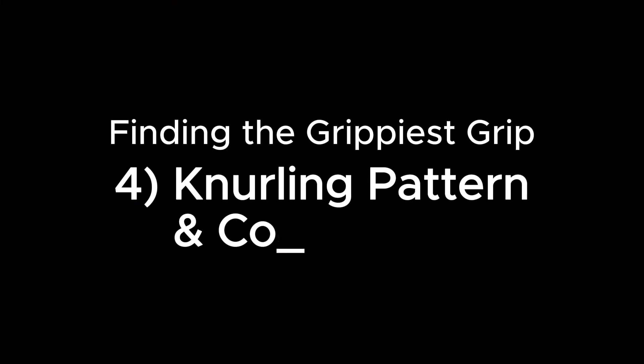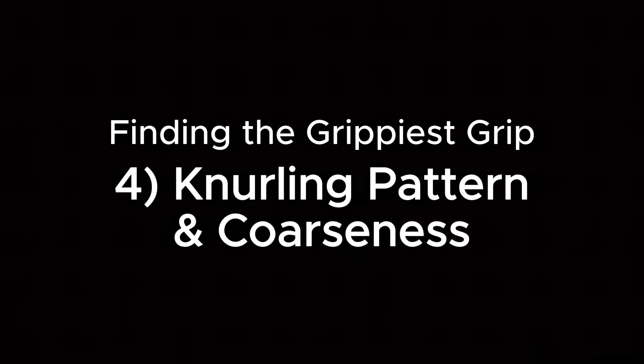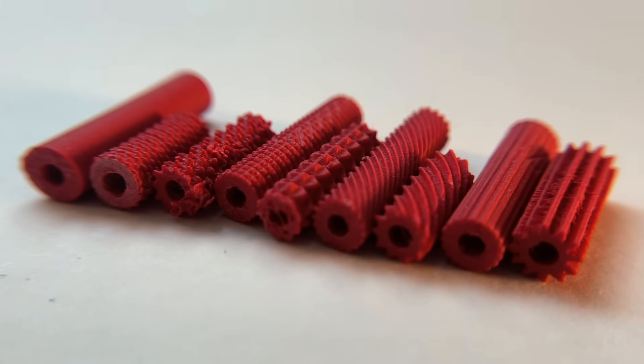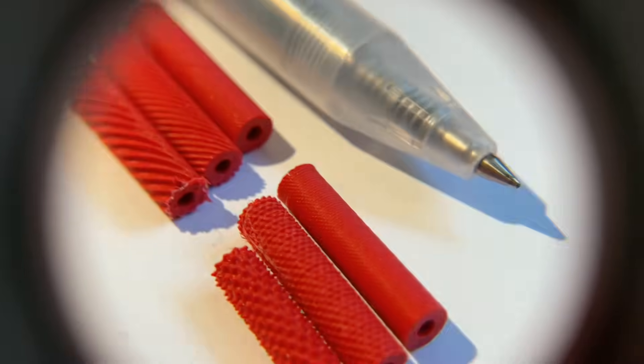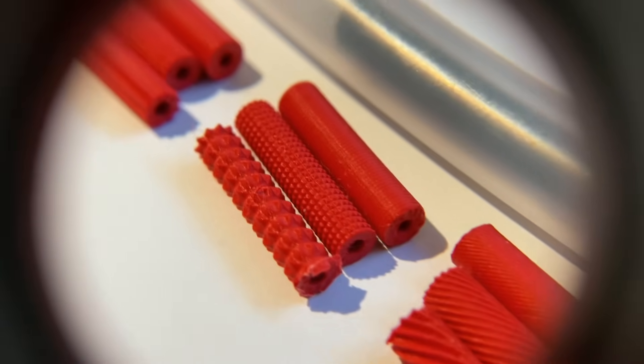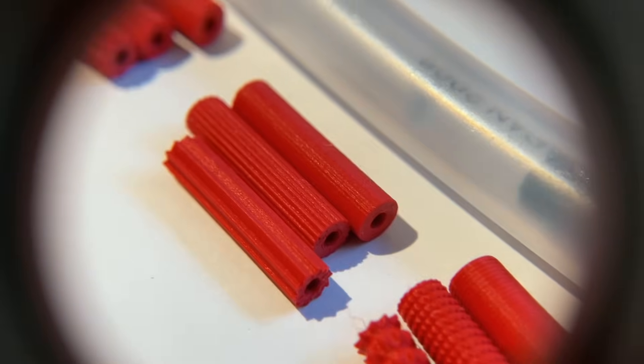Next, I compared some different patterns and their coarsenesses. I tried straight, angled, spiral, cross, and diamond knurling, all against a smooth cylinder. And for each pattern, I tried fine, medium, and coarse. I have to say, I was blown away by the detail the A1 printer was able to get. Anyway, here are the results.